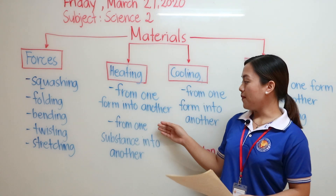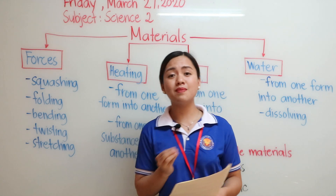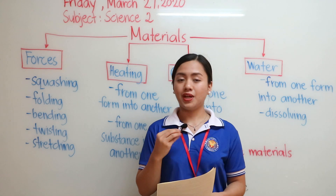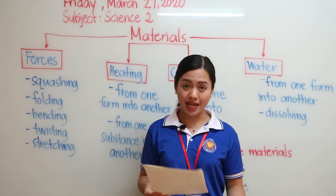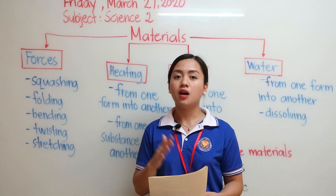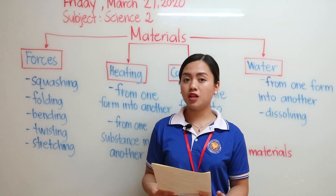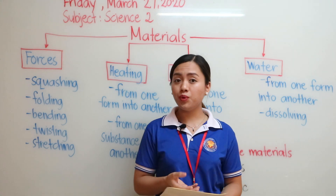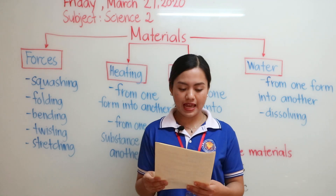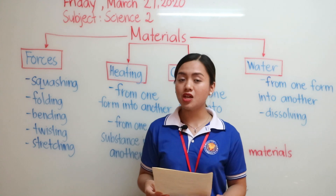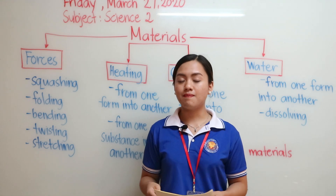Heating can also change a material from one substance into another. For example, clay — if we bake it into a pot, it becomes hard. A paper: if you burn it, it turns into ash. Dough: after we knead it and bake it, it turns into bread. And an uncooked egg is a liquid material, but after we cook it, it becomes a solid material.